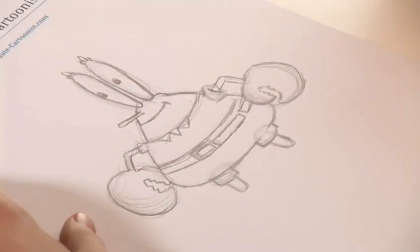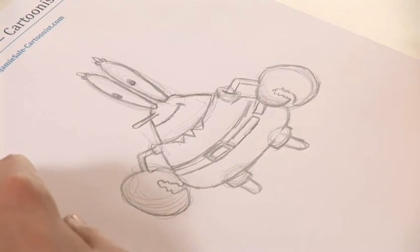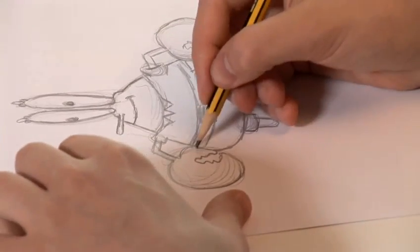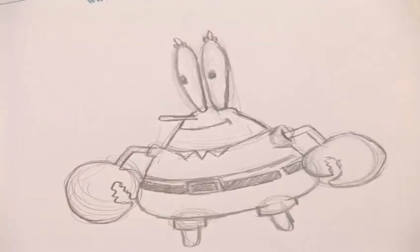Once you've done that, then you shade in the black bits, which in this case is just going to be his belt. And that is how you draw Mr. Krabs.